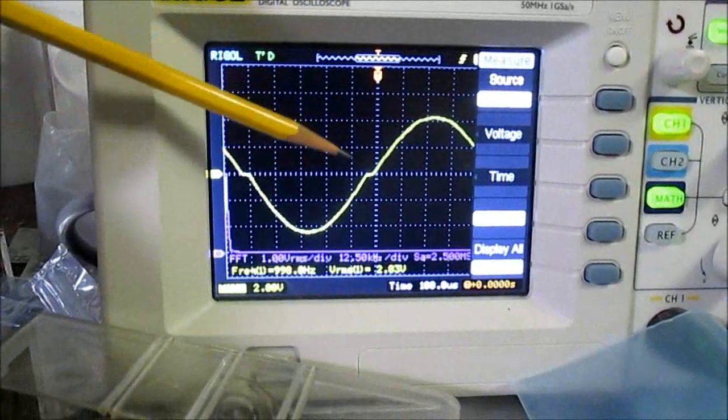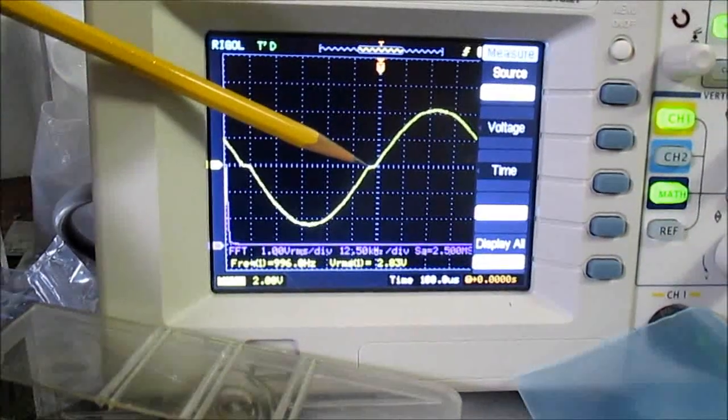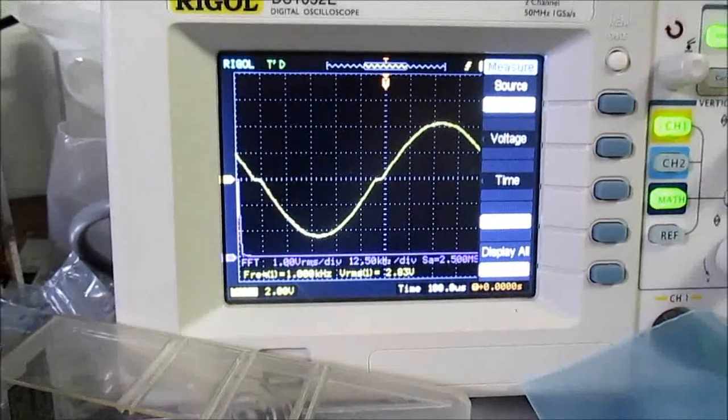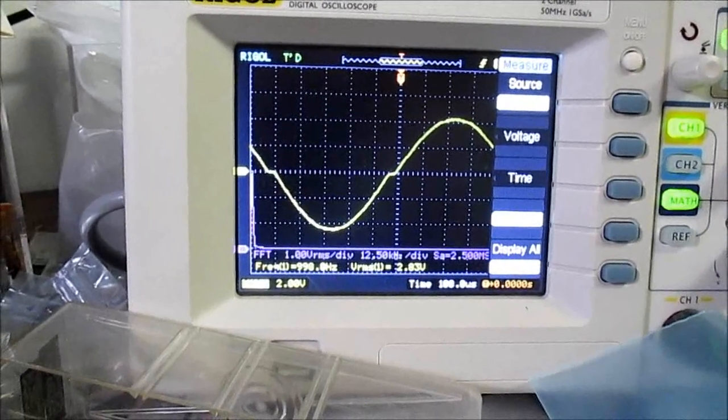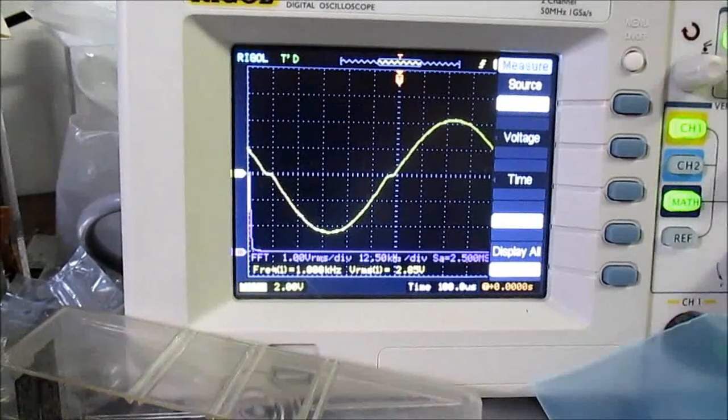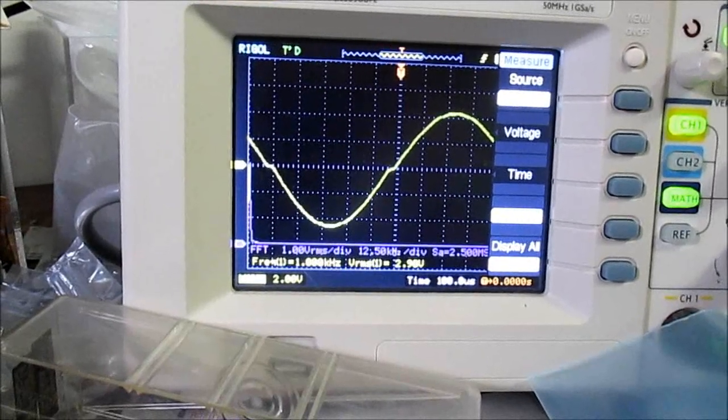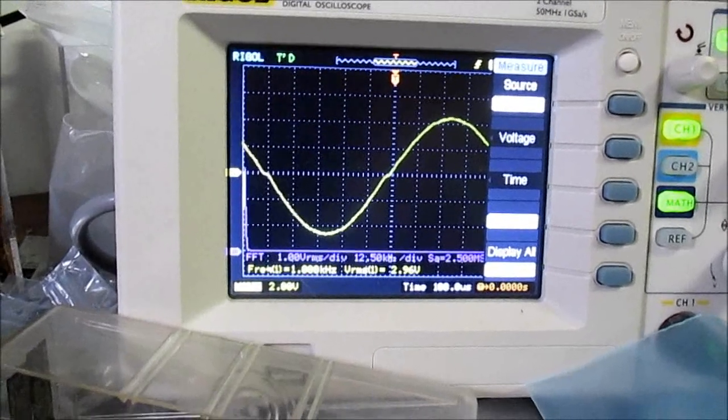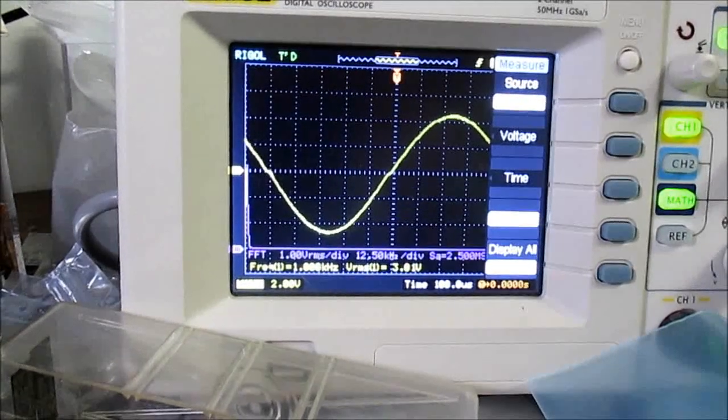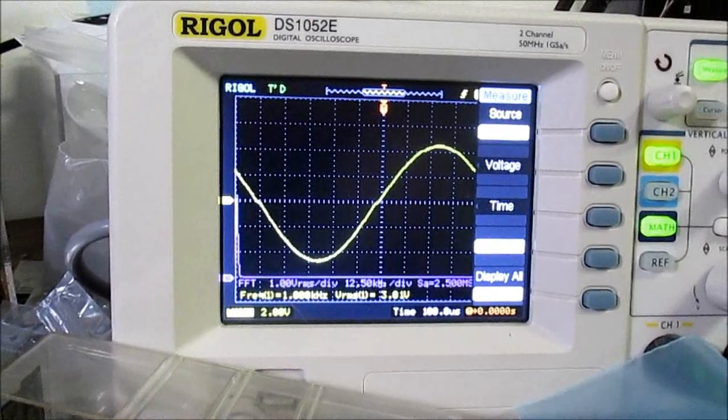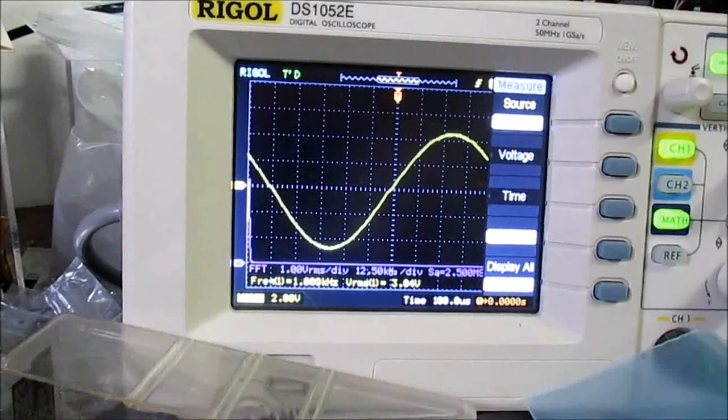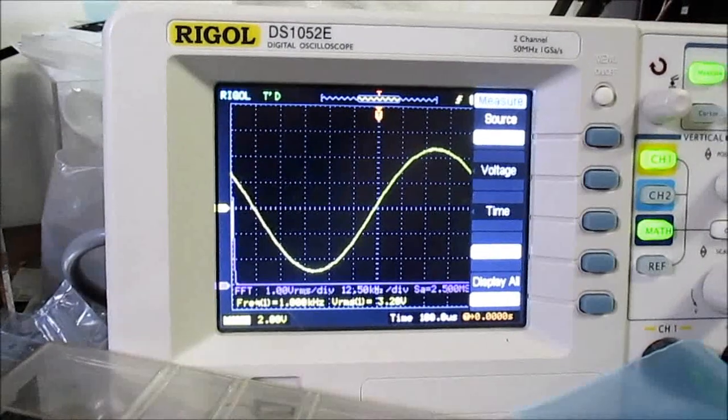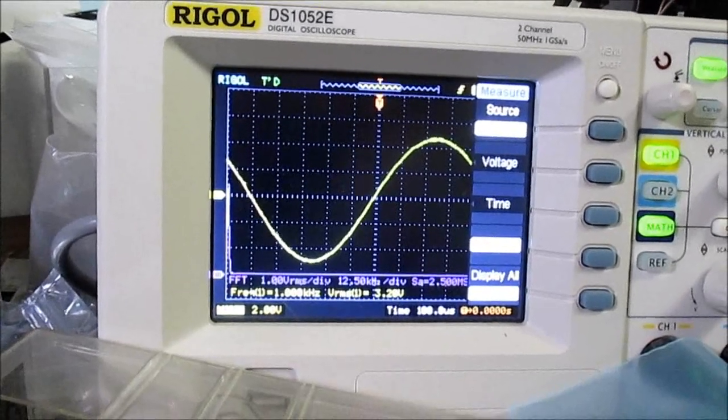I have the bias turned down and you can see a notch - actually surprised it's not even worse. But if I turn up the bias, you can see that goes away. I'll just bring up the bias more and more, right there - completely gone.